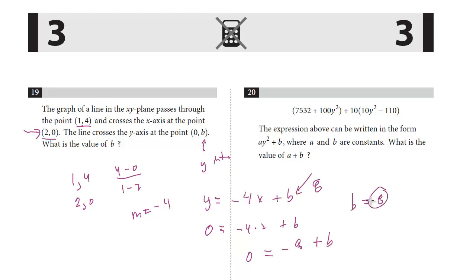Last question, number 20. Here we have this equation: 7532 + 100y² + 10(10y² - 110). It can be written in the form ay² + b, where a and b are constants. What's a plus b?